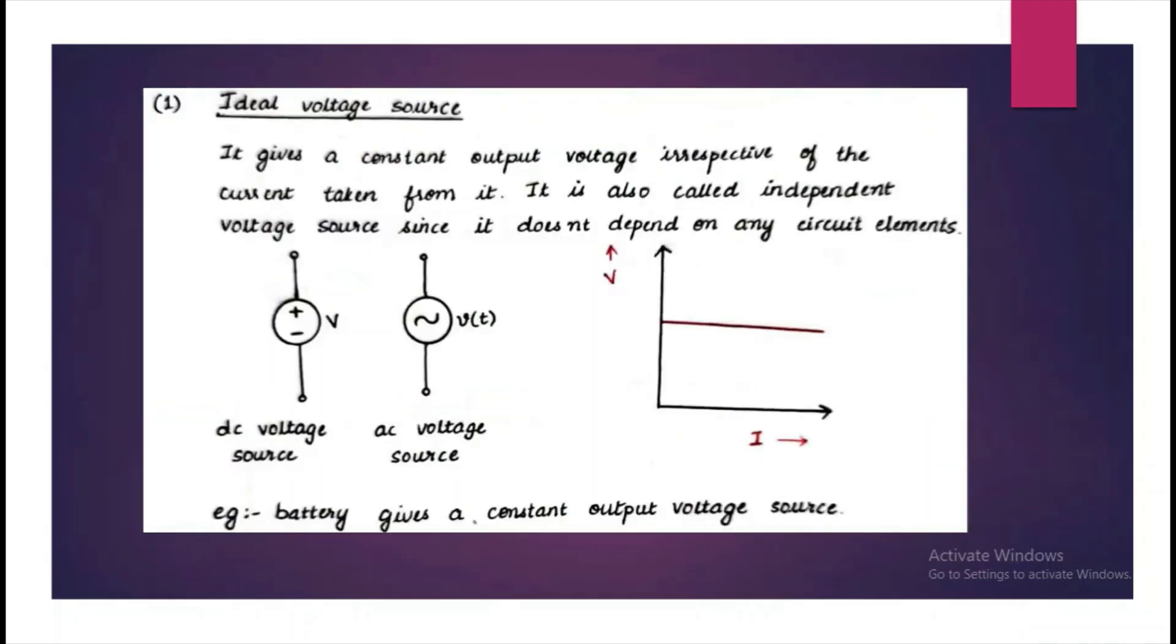Let us learn the first type, Ideal Voltage Source. A DC source is represented by plus or minus V and an AC source is represented by this symbol, small letter V of P. It means that it is varying at every time instant.